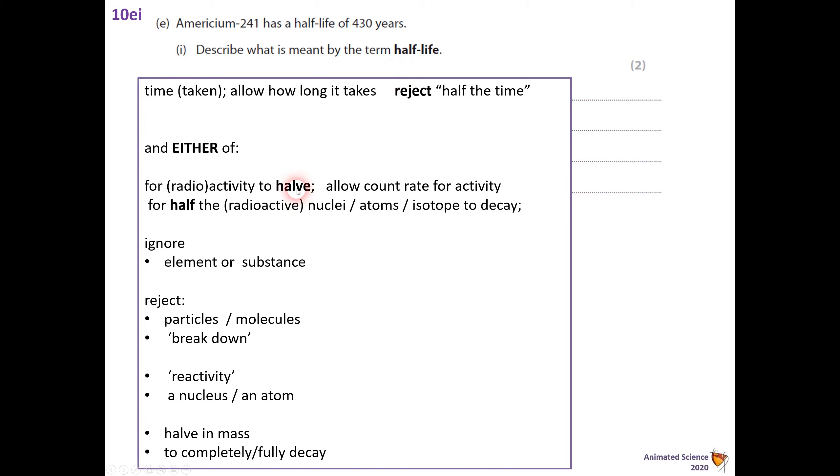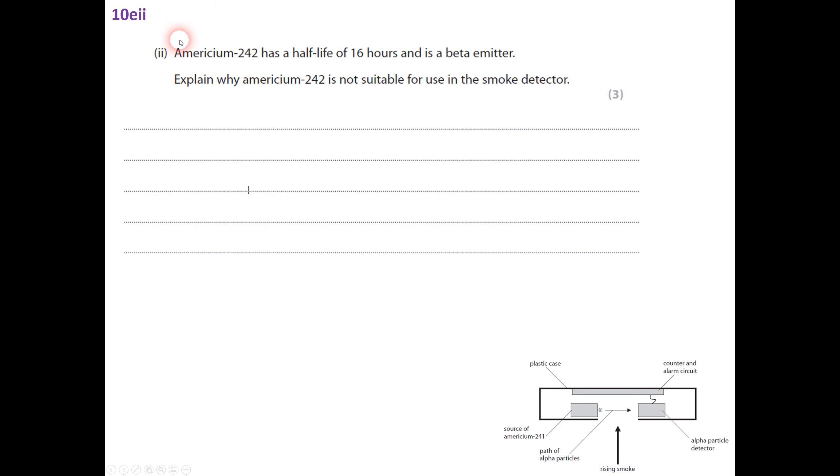So the smoke goes up and clearly blocks the alphas, or the alphas must be absorbed. So the alpha is absorbed. It cannot penetrate the smoke. Second marking point, less or no alpha particles reach the detector. So they would allow not as many. And they would say ignore that the count rate falls as that's in the question already. So two marks.